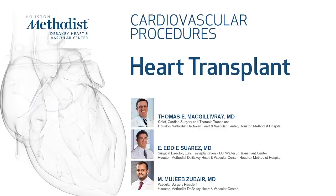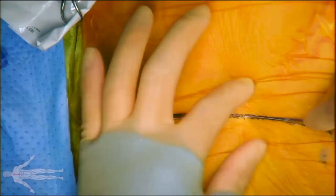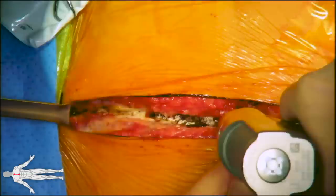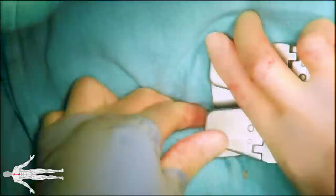This video demonstrates heart transplantation in a 41-year-old female who presented with acutely decompensated heart failure. She initially developed heart failure secondary to postpartum cardiomyopathy. A standard midline sternotomy incision is made, dissection is carried down to the sternum, the interclavicular ligament at the sternal notch is then carefully divided, and an electrical saw is used to perform the midline sternotomy. Next, a sternal retractor is then placed.